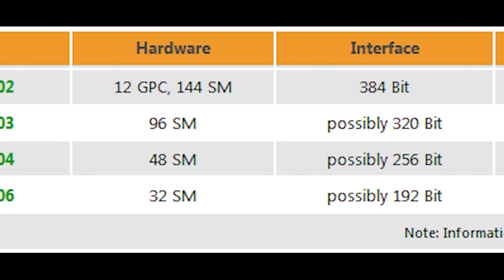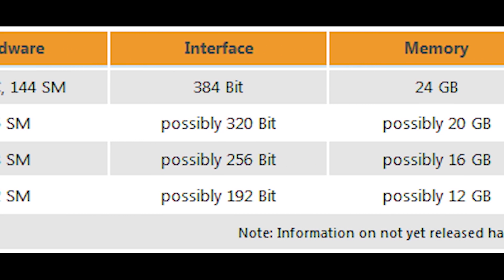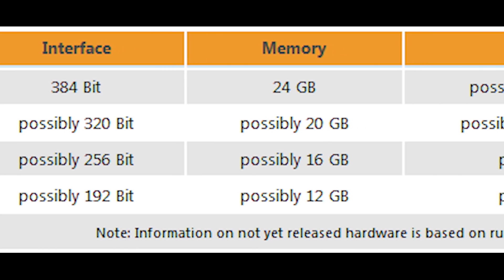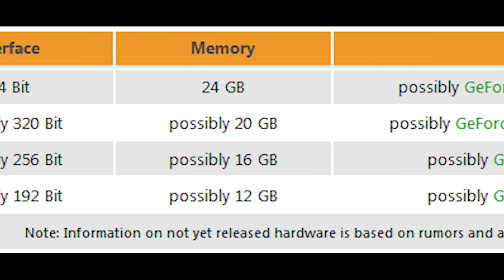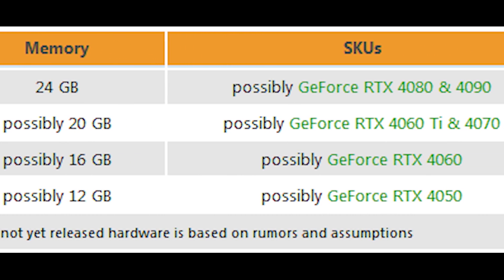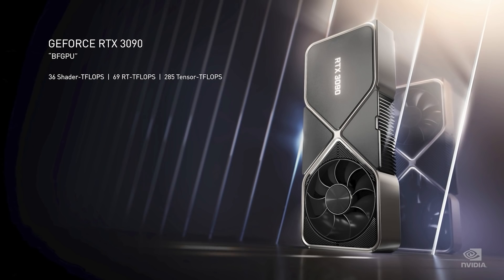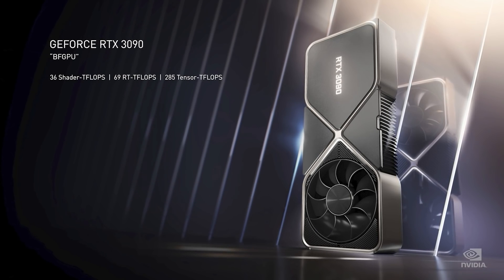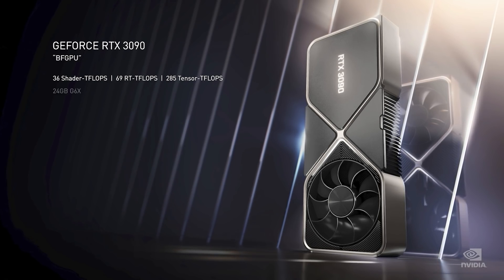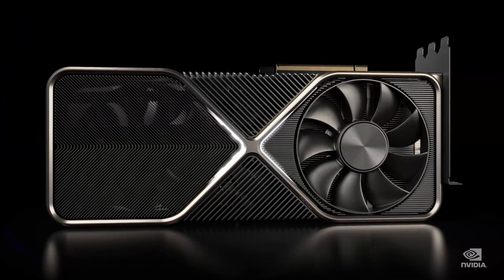3DCCenter.org on Twitter have done a really nice job compiling all of the leaks into one handy format. You can see that AD102 is going to feature the most powerful configuration, while AD106 is going to have the lower end. AD102 is going to feature a 384-bit bus with 24 gigabytes of memory, powering the RTX 4080 and probably the 4090. The cores are running at around 2.5 gigahertz, though this is early information so it could be wrong.